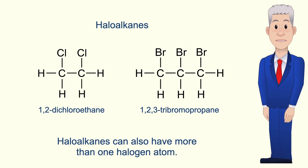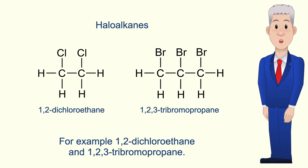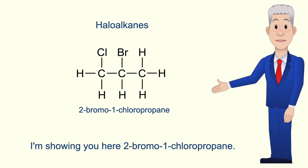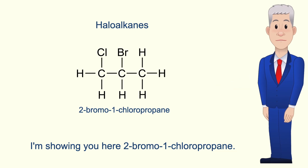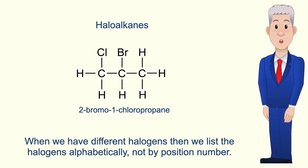Haloalkanes can also have more than one halogen atom — for example, 1,2-dichloroethane and 1,2,3-tribromopropane. Here I'm showing you 2-bromo-1-chloropropane. When we have different halogens, we list the halogens alphabetically, not by position number.